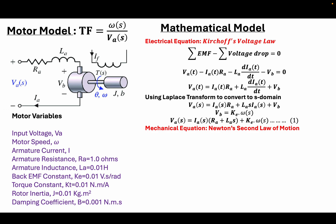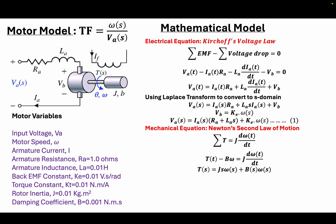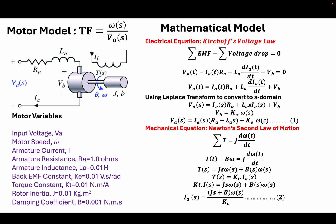The second equation is the mechanical equation, and we are going to use Newton's law of rotational motion to derive it. It states that the summation of applied torque equals J, the moment of inertia, times dω/dt. The summation of torque is the applied torque minus the damping torque, given by bω, where b is the damping coefficient, equal to J·dω/dt. Converting to the s-domain using the Laplace transform, the applied torque is directly proportional to the armature current, and the constant of proportionality is Kt, the torque constant.